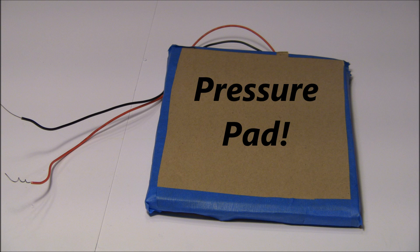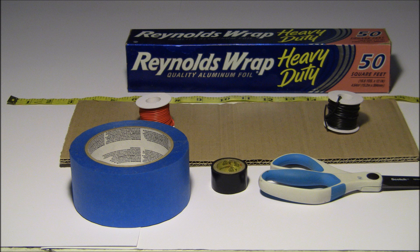How to make a pressure pad. You're going to need aluminum foil, a tape measure, some wire, cardboard, tape, electrical tape, scissors, glue, and a piece of paper.